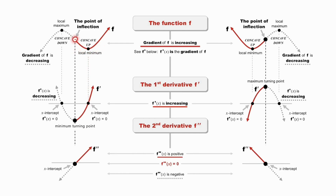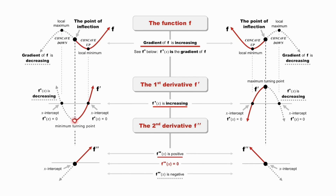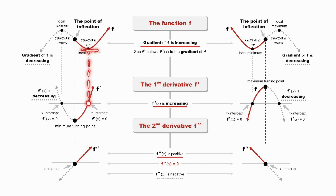At the point of inflection, where the graph changes from being concave down to concave up, the derivative has a turning point. So: at the local maximum the derivative has an x-intercept; at the local minimum the derivative has an x-intercept; and at the point of inflection the derivative has a turning point. When I take the derivative of the derivative, what's the derivative at a turning point? It's zero. So in the second derivative I get an x-intercept.